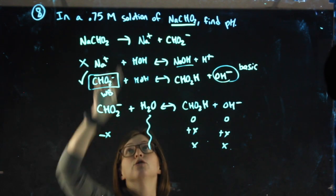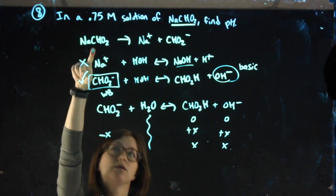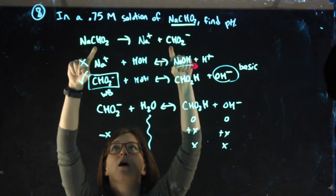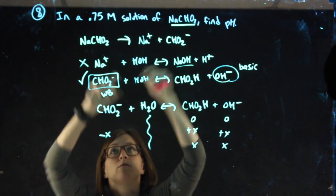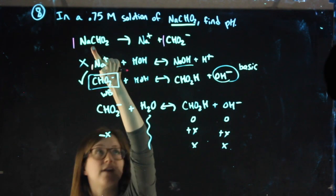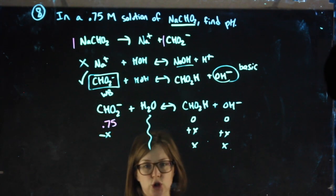I just need a molarity of CHO2-. I don't have a molarity of CHO2-, but I do have the molarity of NaCHO2 of my salt. My salt and my weak base are in a one-to-one ratio. So therefore, since this was 0.75 molar, this is 0.75 molar, and can go in my ICE chart.